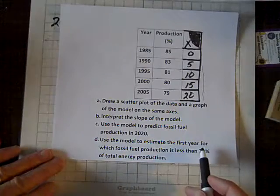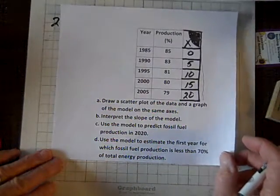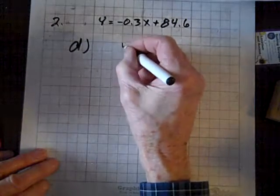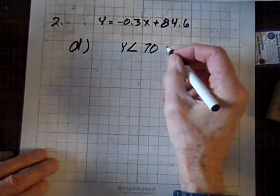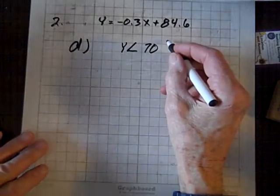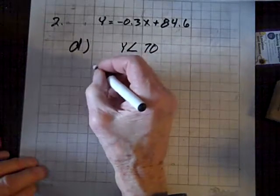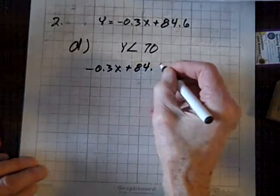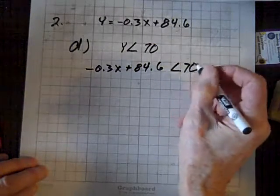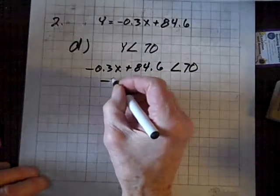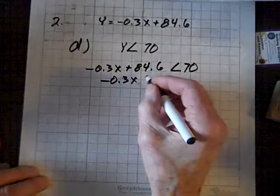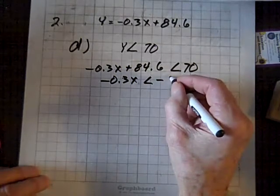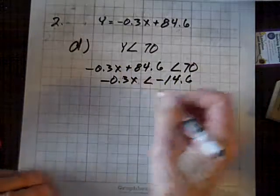Now, for D, it says, use the model to estimate the first year for which the fossil fuel production is less than 70% of the total energy production. Okay, so we'll say Y is going to be less than 70, in terms of percentages. That means that negative 0.3X plus 84.6 is less than 70. So now, let's isolate the term packing X, which is negative 0.3X. That is, we'll subtract 84.6 from both sides.